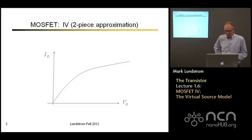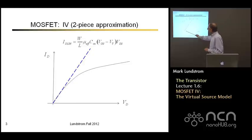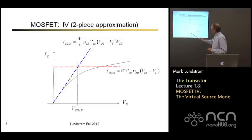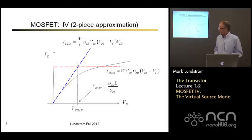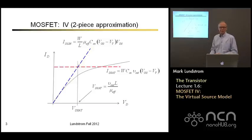Let's recall what we were doing in the last lecture. We developed this very simple two-piece approximation for the IV characteristic. We had a simple expression for the linear current, a simple expression for the saturated current, those two currents intersected at a critical voltage we'll call VDSat, and we had a simple expression for VDSat. Now our question is: can we extend this model and make it a smooth and continuous model that describes the IV characteristics better?